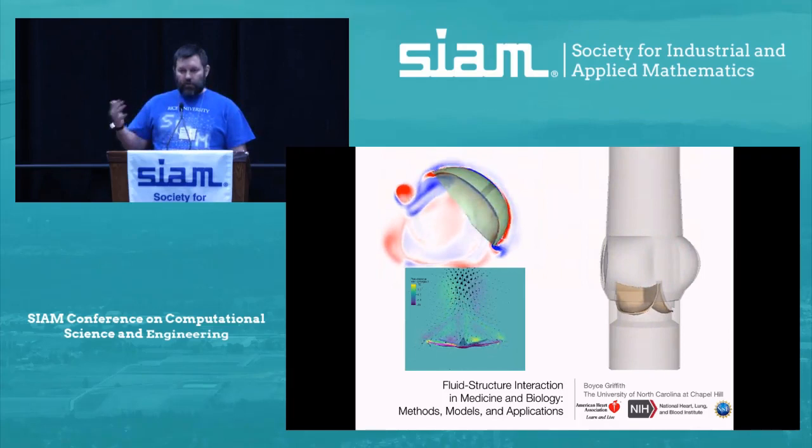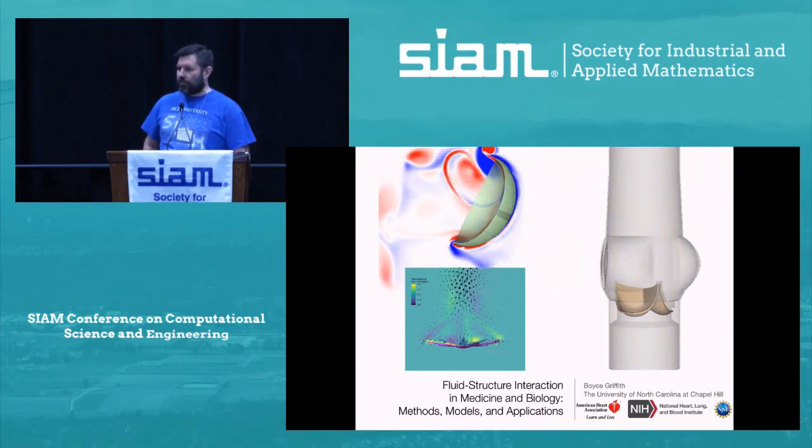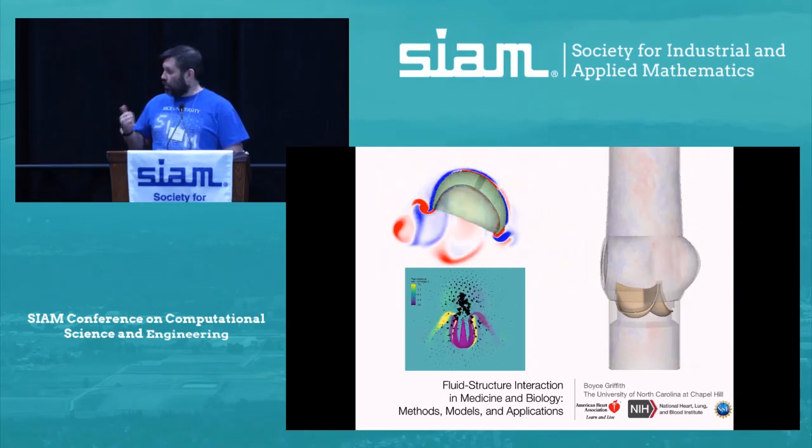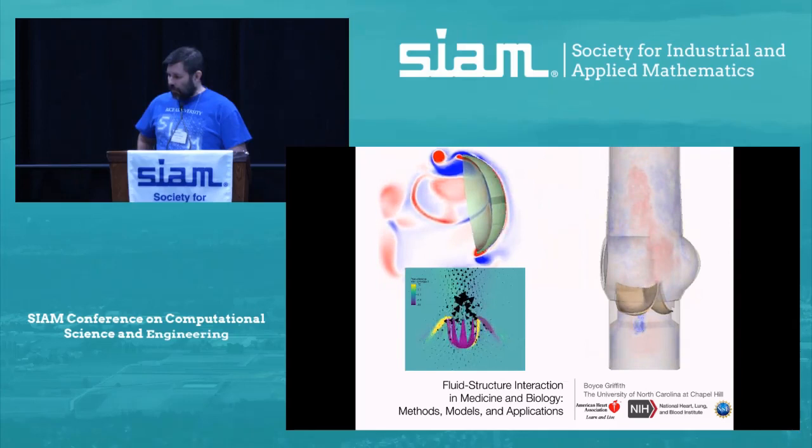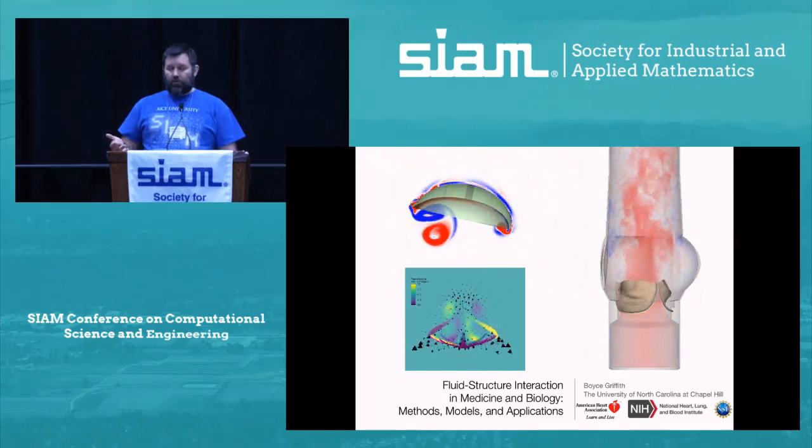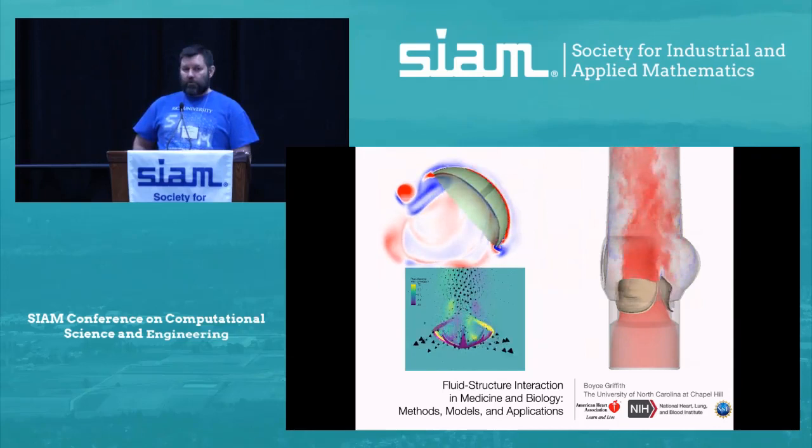He received his B.A. in computational applied mathematics from Rice University and a simultaneous B.S. in computer science. He went on to obtain his Ph.D. in mathematics from Courant, where he did his subsequent postdoctoral work. Before moving to UNC, he was a faculty member at the NYU School of Medicine. Along the way, he was awarded the DOE Computational Science Graduate Fellowship, the Kurt O. Friedrichs Outstanding Dissertation Award, the Whitehead Postdoctoral Fellowship, the Medtronic American Heart Association Postdoctoral Fellowship, and the NSF Career Award.